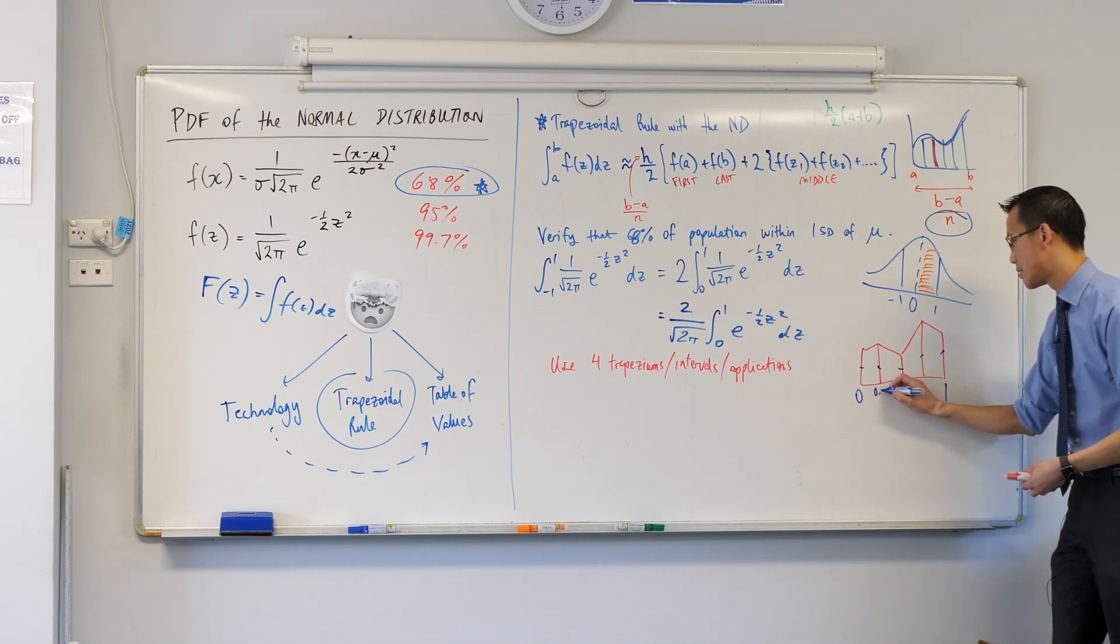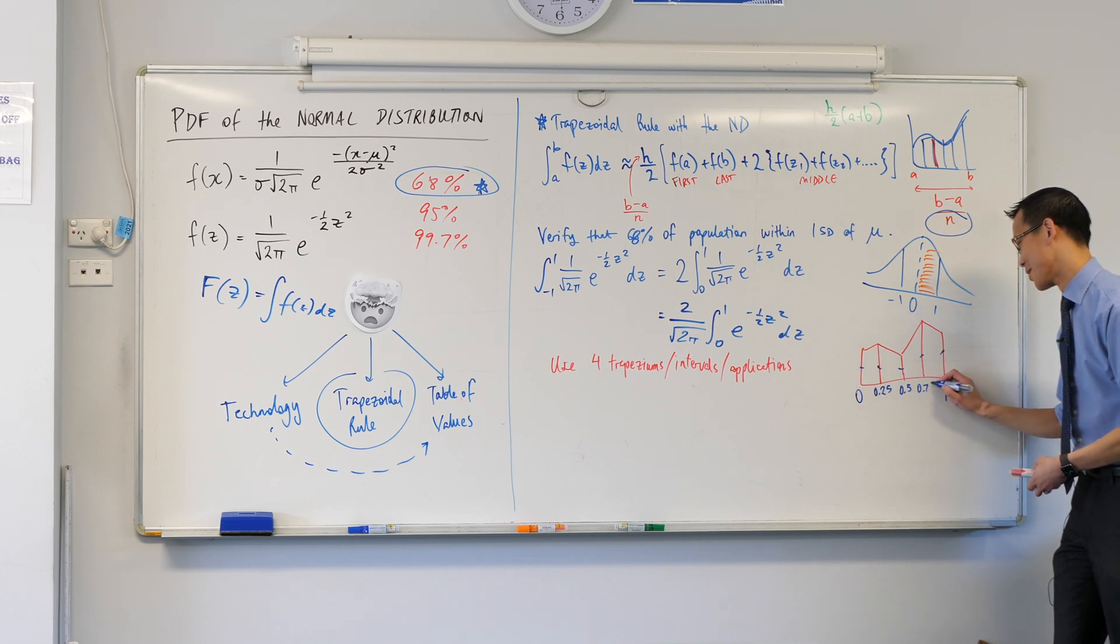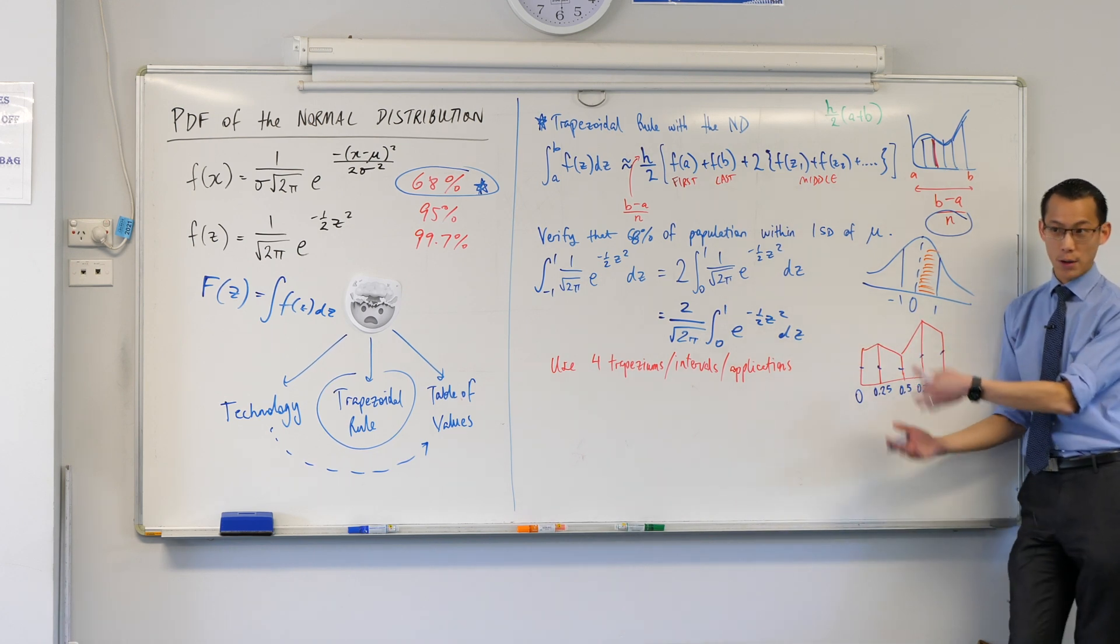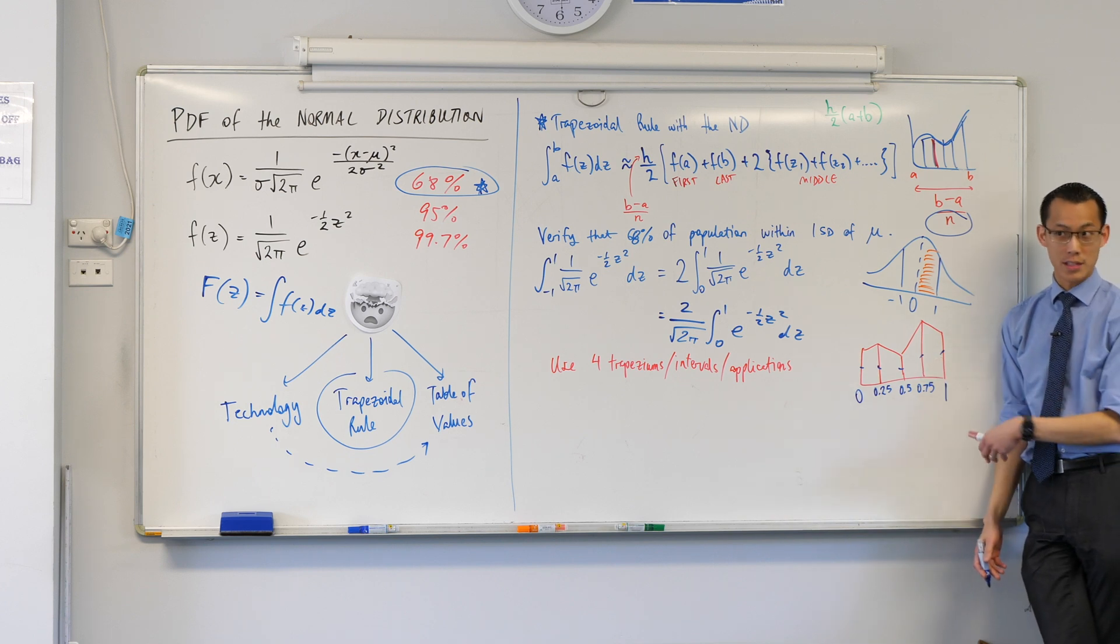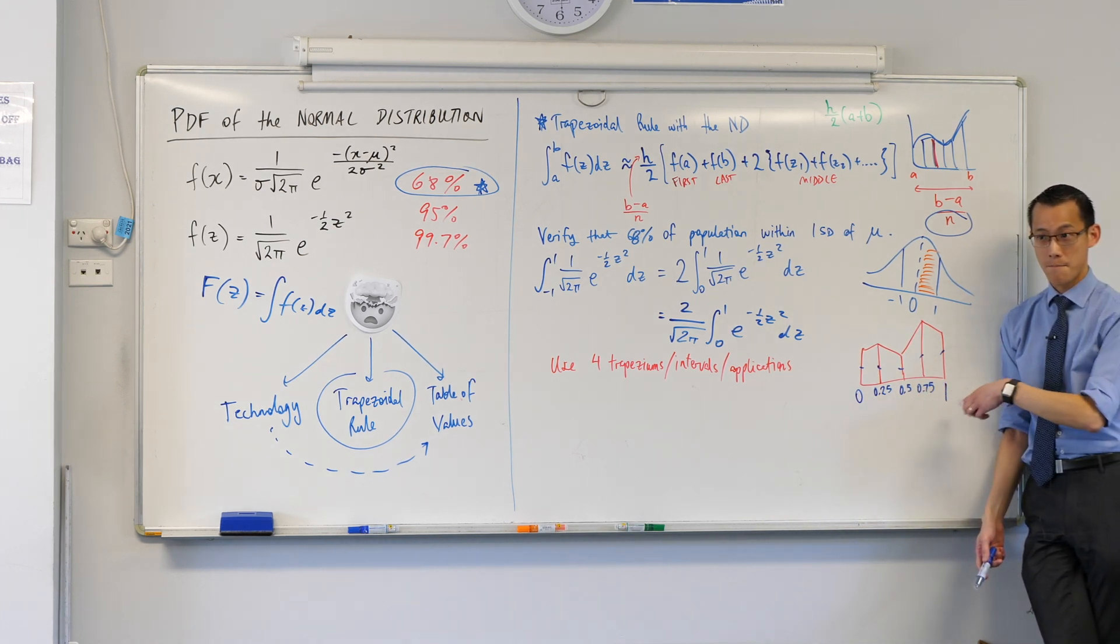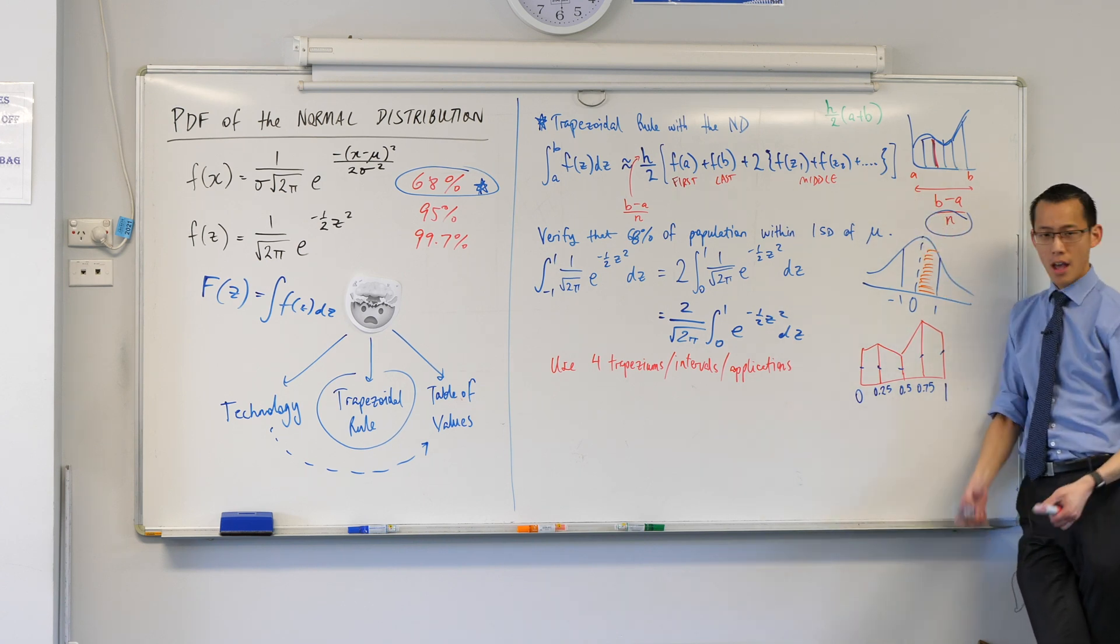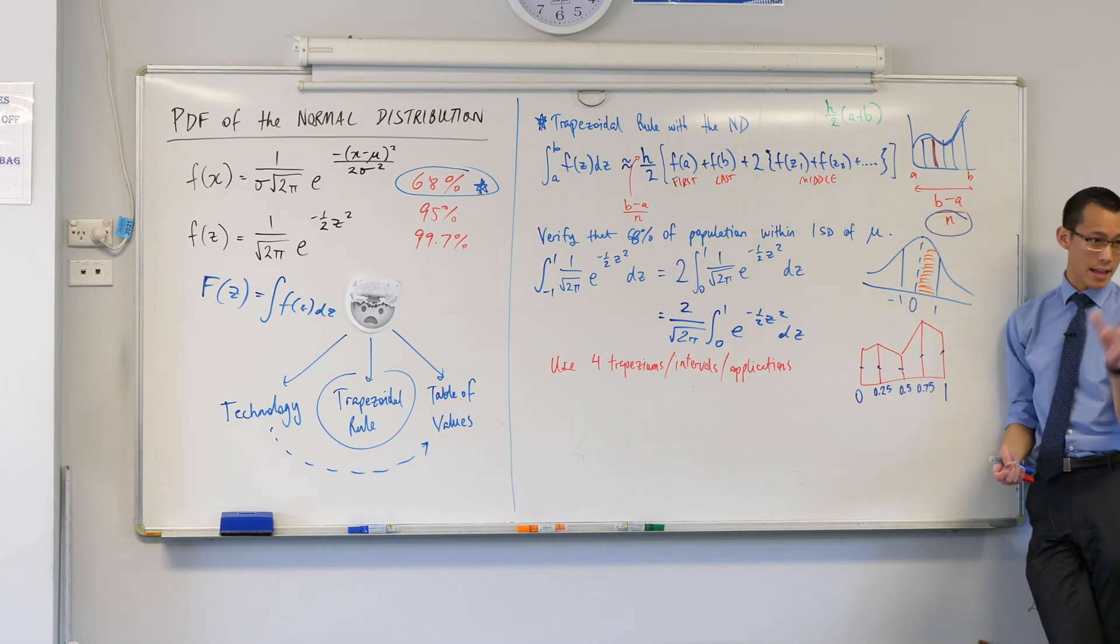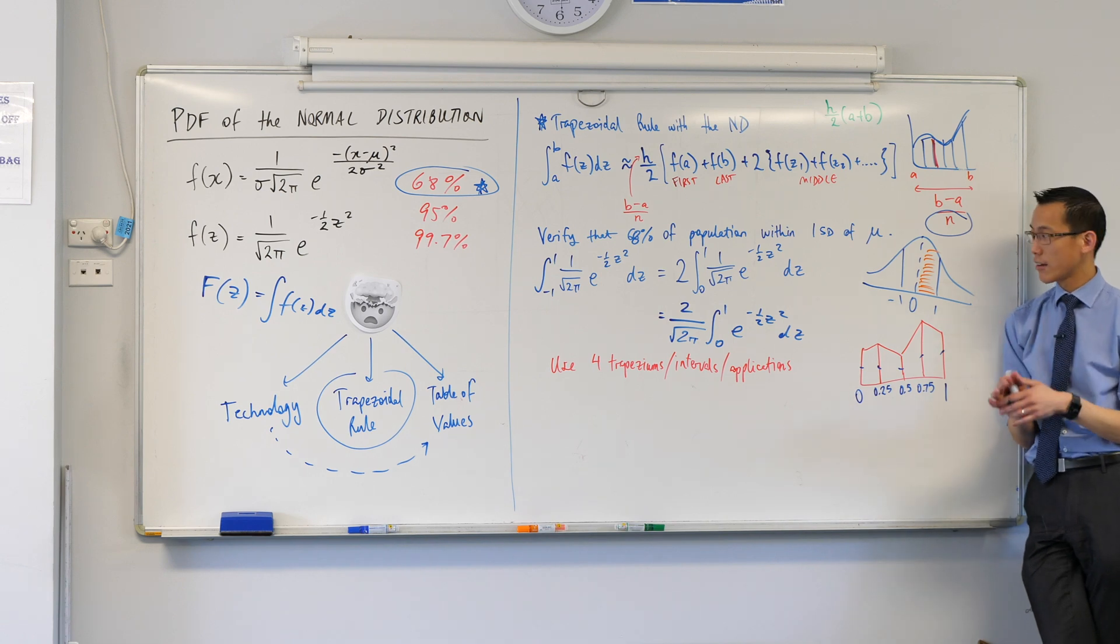So this distance here is one, so therefore I'm going to go a quarter every time. Are you okay with that? I'm just going to go ahead and write these as decimals because we're not going to be able to avoid decimals for very long. So 0.25, 0.5, 0.75. Are you good with that? Do you see I've got these values that are going to go in here?